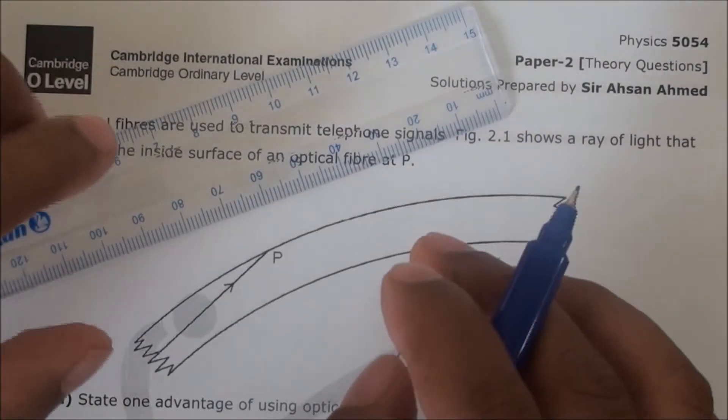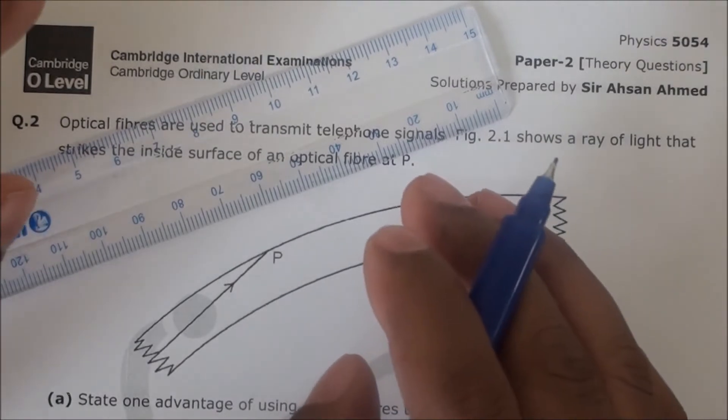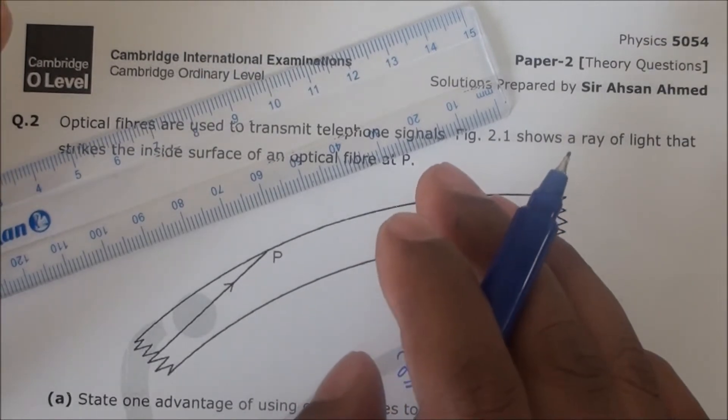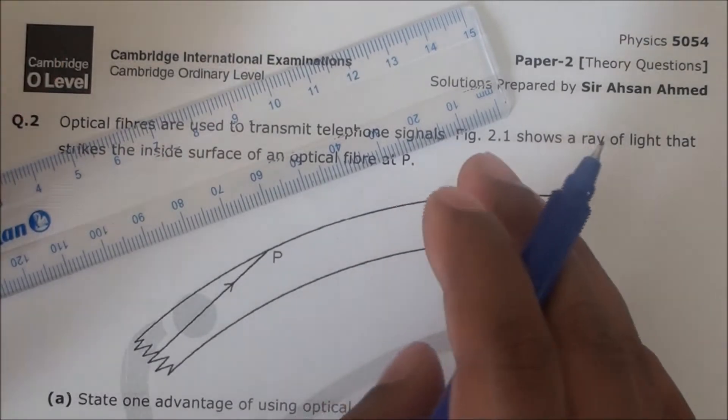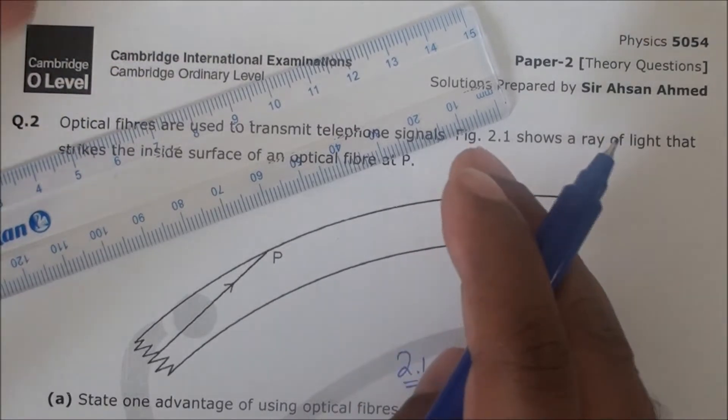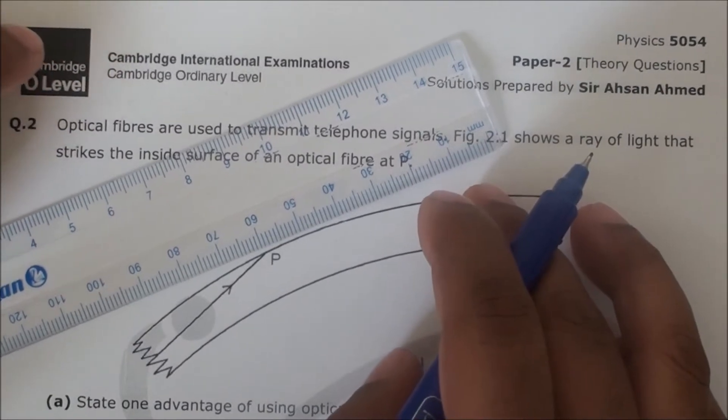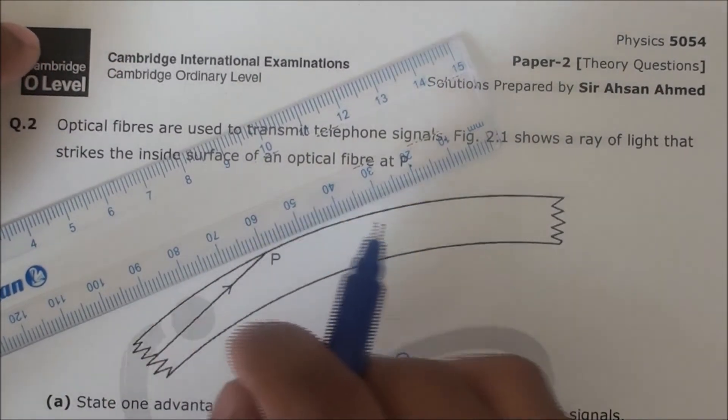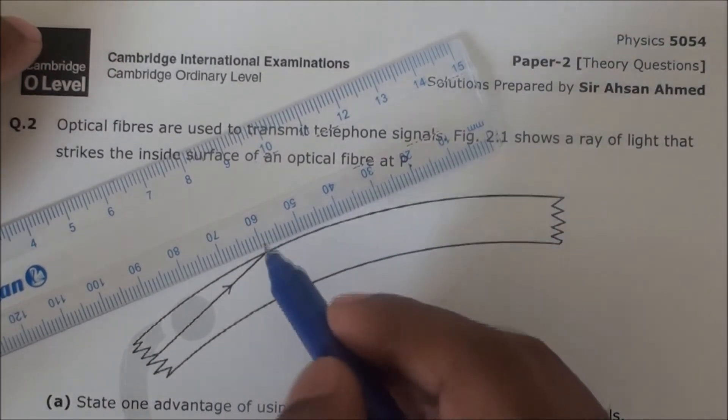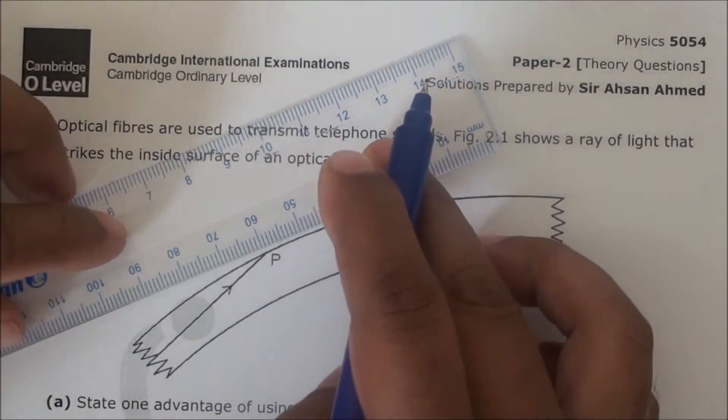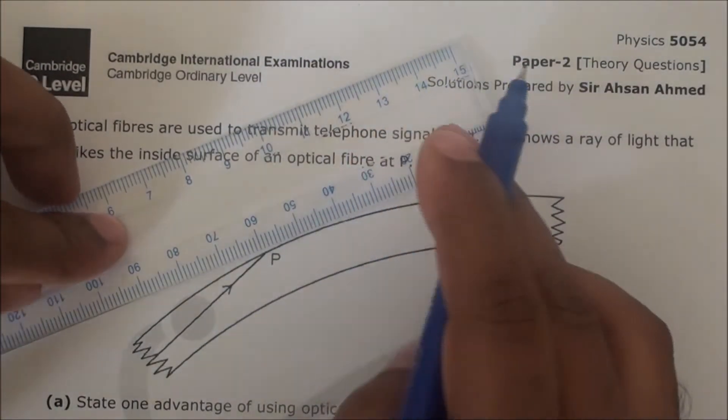Don't do the normal directly. With naked eye, you might feel that your angle is correct, but you need to show proper working. A tangent is that line which touches that curve only at one point, and here that one point is P for us.